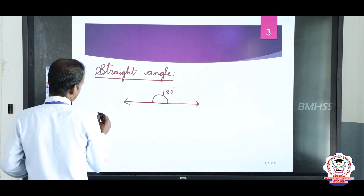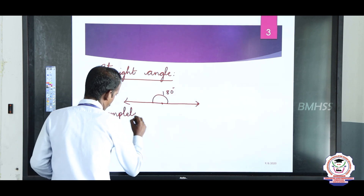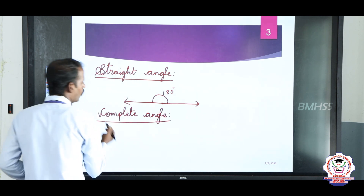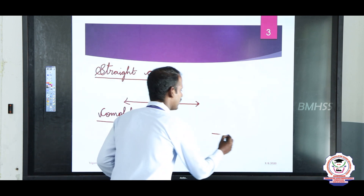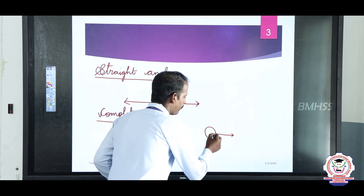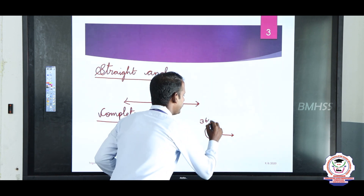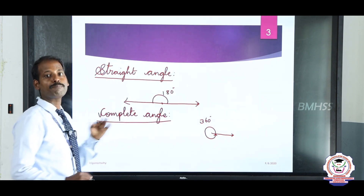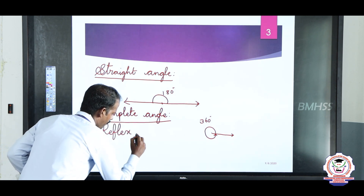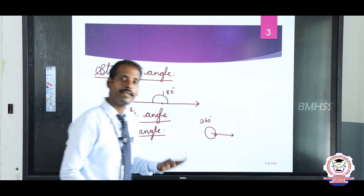And then next: complete angle. What is a complete angle? Here a ray starts at a point and is rotated fully, completing back to the same line. That is 360 degrees — that is a complete angle. And then next: reflex angle. What is a reflex angle? A reflex angle is more than 180 degrees.